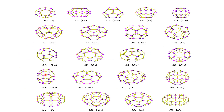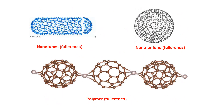So in summary, the types of philorenes are buckyball clusters — where C20 is the smallest and C60 is the most common — nanotube philorenes, nano onion philorenes, and polymer philorenes.